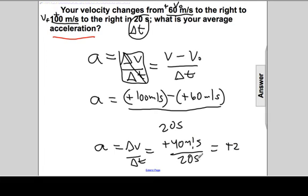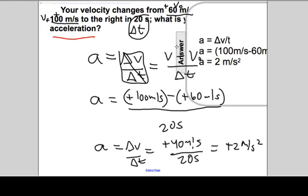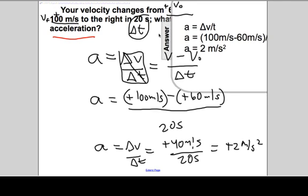And meters per second over seconds are meters per second squared. Positive 2 meters per second squared is the answer.